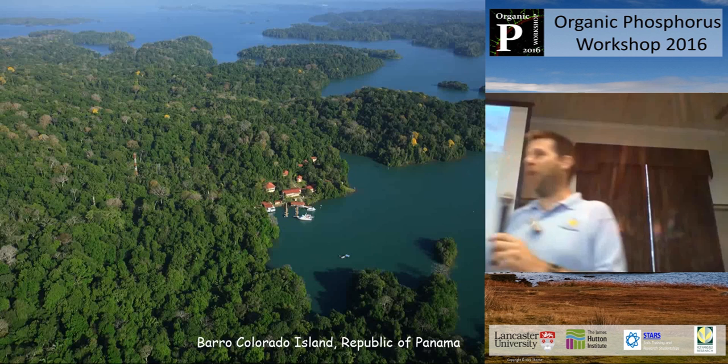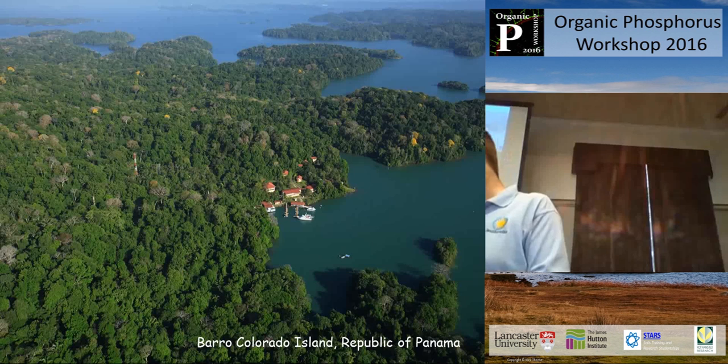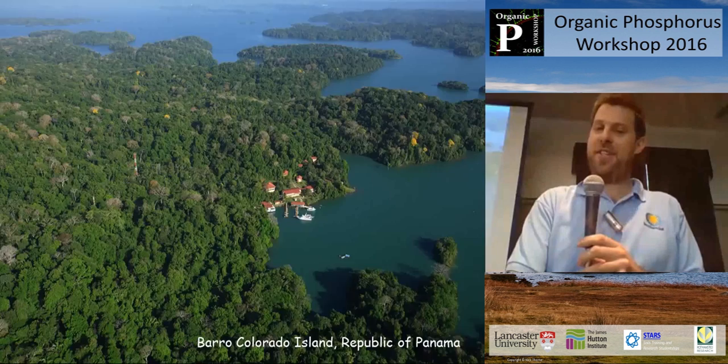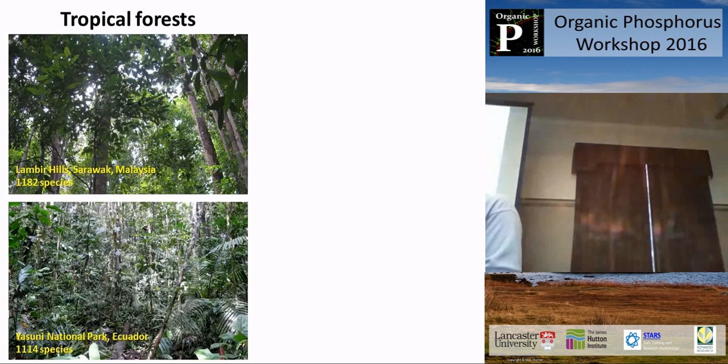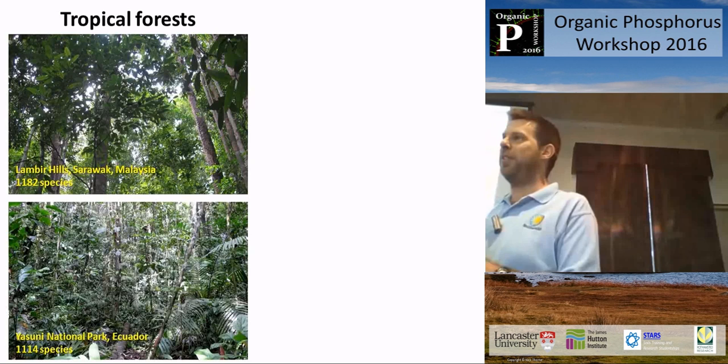There are 300,000 trees in this plot — trees bigger than one centimeter diameter — and among those 300,000 trees there are actually 300 tree species. This highlights one of the real challenges I face in trying to understand phosphorus in the environment: the diversity in tropical forests. Panama is not even that diverse as a tropical forest. In our plots in the Amazon and Southeast Asia there are more than 1,000 species of trees — in 25 hectares at Yasuní National Park in the Amazon, for example.